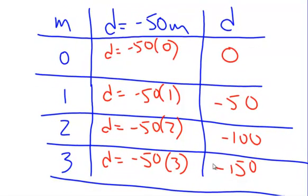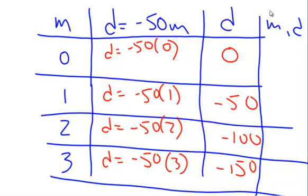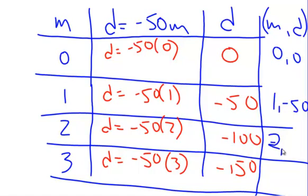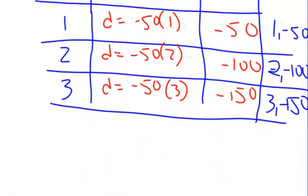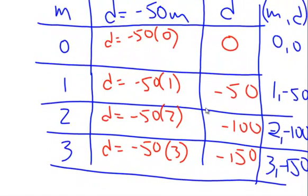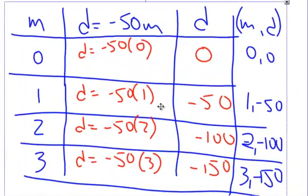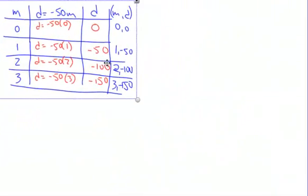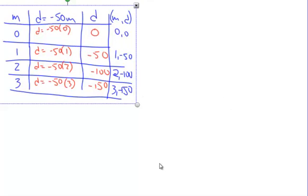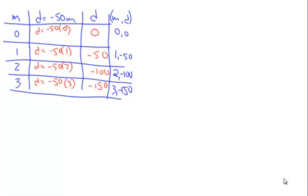So I have my ordered pairs. I can make my extra column — m and d, which is kind of like x and y. So: 0,0 then 1, negative 50 then 2, negative 100, and then 3, negative 150. Now I can graph those. They're huge numbers — I'm not going to fit it on the graph if every line is 1. So I'm going to represent x by 1s, but y's I'm going to go by 50s.